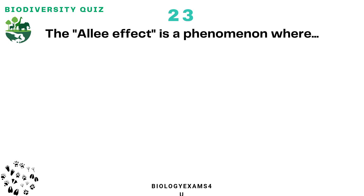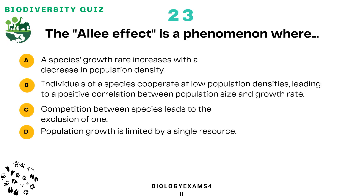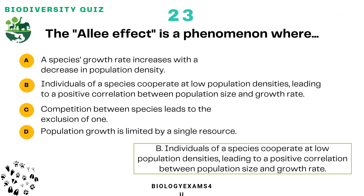Question number 23: The Allee effect is a phenomenon where? Option A: A species' growth rate increases with a decrease in population density. Option B: Individuals of a species cooperate at low population densities, leading to a positive correlation between population size and growth rate. Option C: Competition between species leads to exclusion of one. Option D: Population growth is limited by a single resource. The correct answer is: individuals of a species cooperate at low population densities, leading to a positive correlation between population size and growth rate.